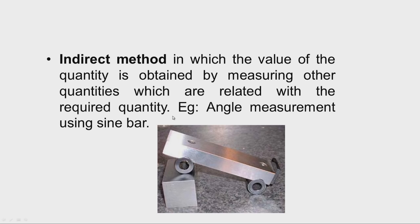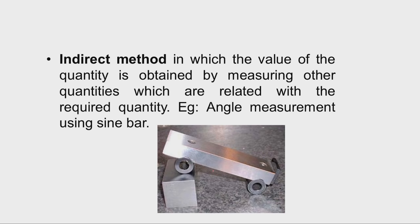The second method is the indirect method, in which the value of the quantity is obtained by measuring other quantities related to the required quantity. For example, measurement of angle using a sin bar. The component whose taper is to be measured should be kept on the datum surface, a sin bar of appropriate length is placed on the tapered component.